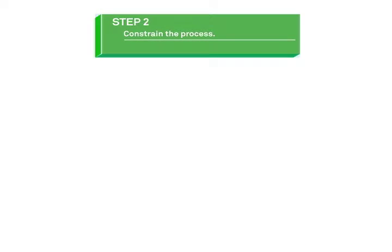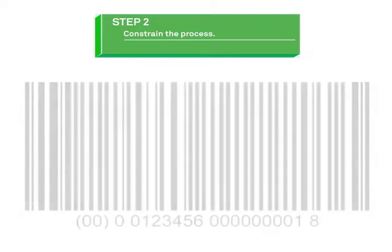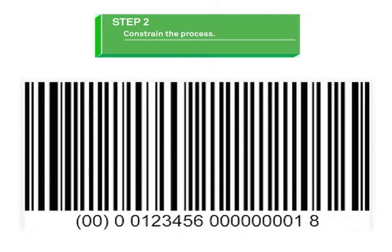Second, look for ways to constrain the process so it is impossible to make a mistake. For example, many laboratories use reagent barcode systems to make sure expired reagents cannot be used.